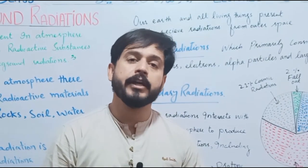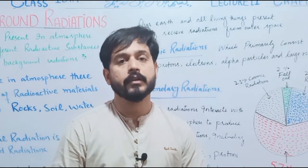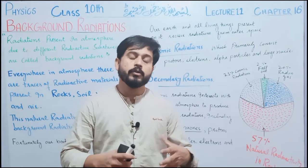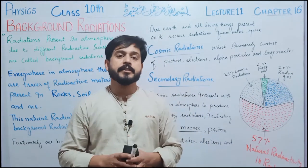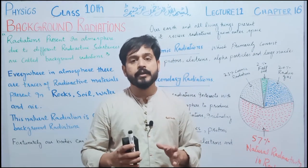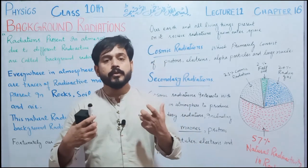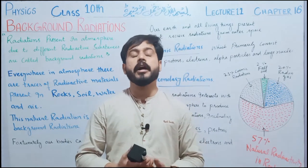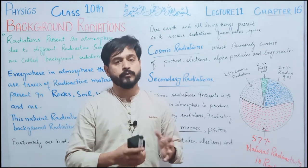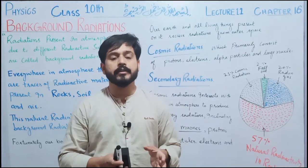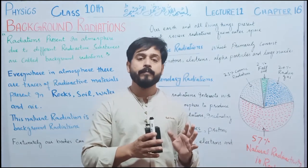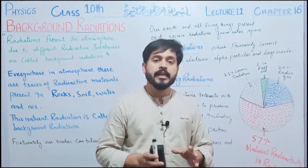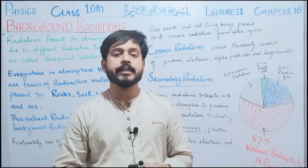With the physics of class 10th, chapter number 18, today our lecture number 11. Today we will talk about background radiations. If we talk about background radiations, we can simply define them as such radiations which are present in our environment, in our atmosphere, due to different kinds of radioactive substances or materials. Such radiations which are continually being emitted from different kinds of radioactive substances present in our atmosphere are called background radiations.